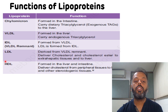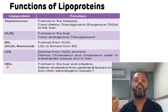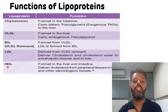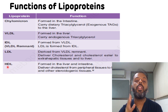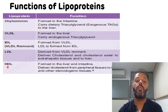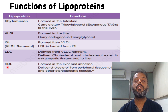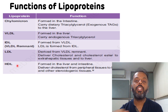HDL is formed in the liver and intestine, and it delivers cholesterol from peripheral tissues to the liver and other steroidogenic tissues. That is why HDL is known as good cholesterol.